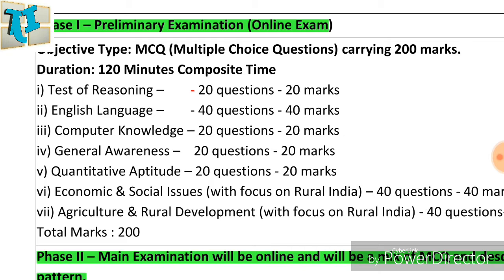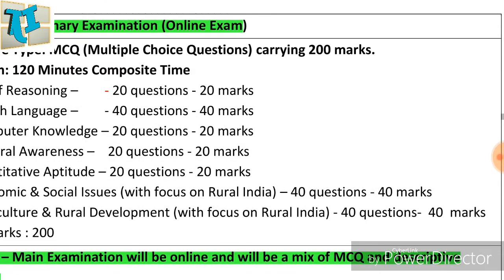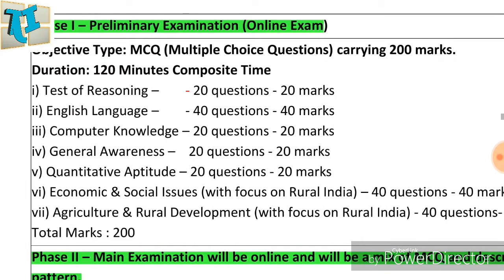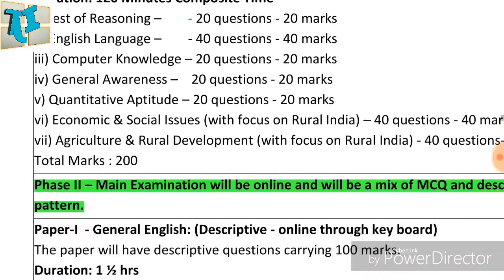Economic and Social Issues focus: 40 questions. Agriculture and Rural Development: 40 questions. This completes the Phase 1 preliminary exam pattern.